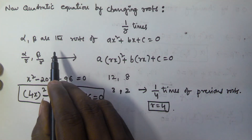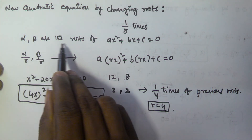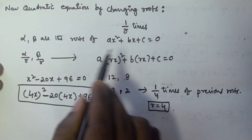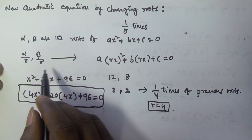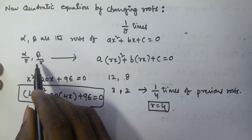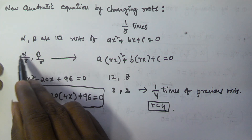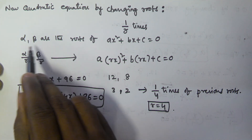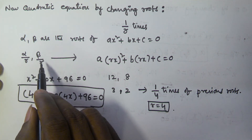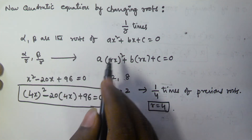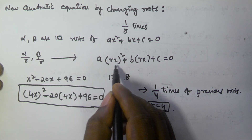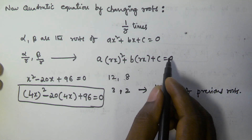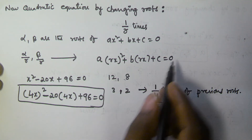To summarize: if alpha, beta are the roots of Ax squared plus Bx plus C equals zero, then the new quadratic equation whose roots are alpha by r, beta by r — which is 1 by r times of the previous roots — is given by A of rx squared plus B of rx plus C equals zero.